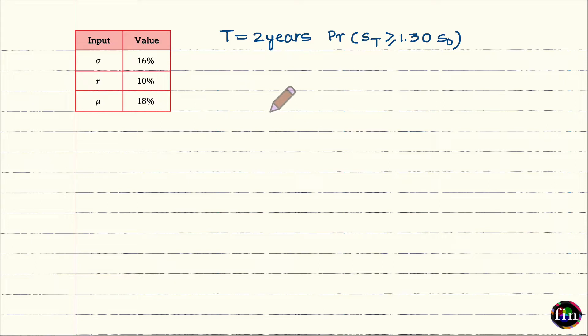In this video, through a solved example, let us take a look at the log-normal distribution assumption which the Black-Scholes model makes for future stock prices.